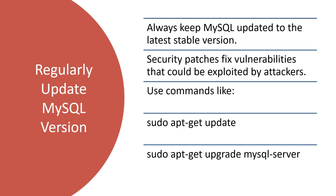Next, regularly keep your MySQL version updated. Keeping MySQL updated ensures that you have the latest security patches and features. Outdated software often contains vulnerabilities that attackers can exploit. For example, you can use sudo apt-get update and sudo apt-get upgrade mysql-server to update MySQL on a Linux system. A tech company with a large user base should regularly update its MySQL instance to protect against new threats. If you're using Windows or another platform, you can upgrade that way as well.